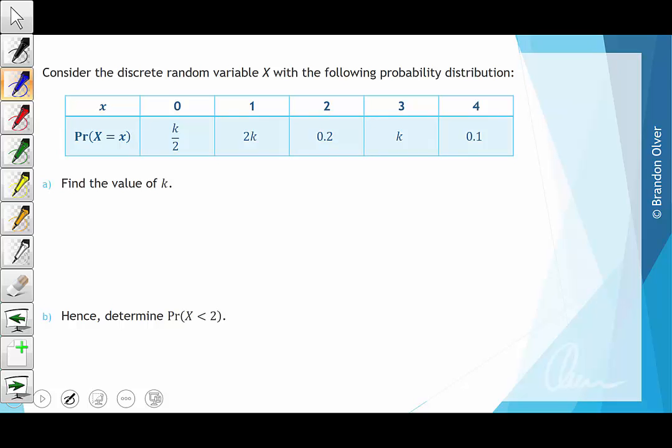Consider the discrete random variable X with the following probability distribution. Part A asks us to find the value of k. To do this we need to remember that the sum of all the probabilities in any distribution will add up to 1.